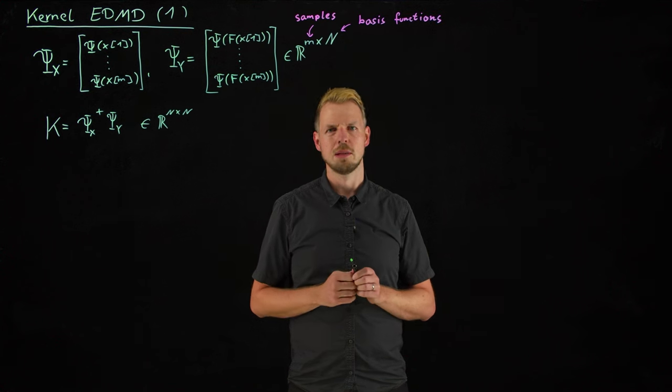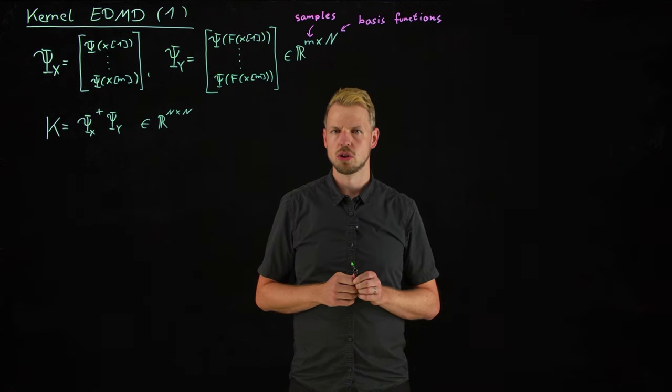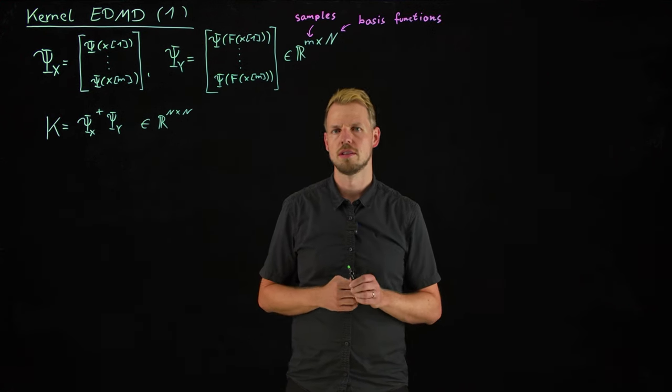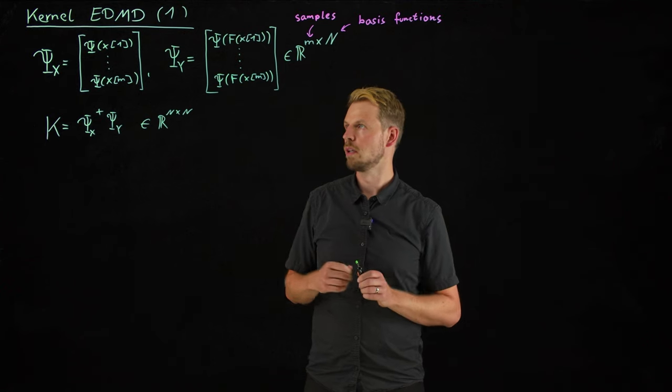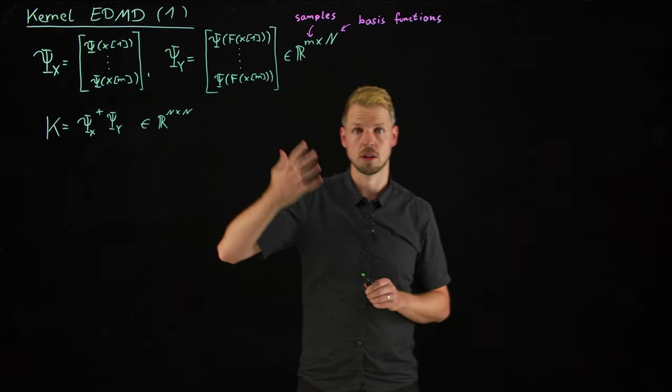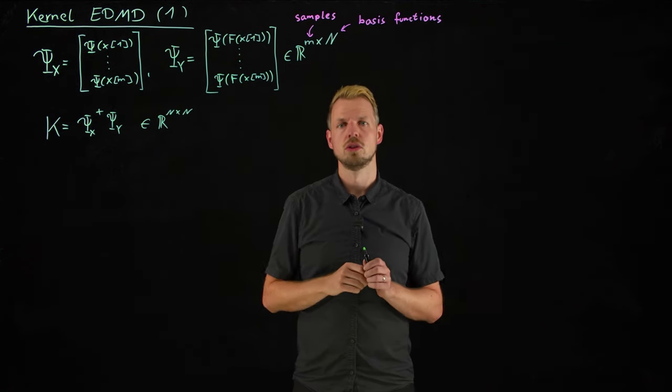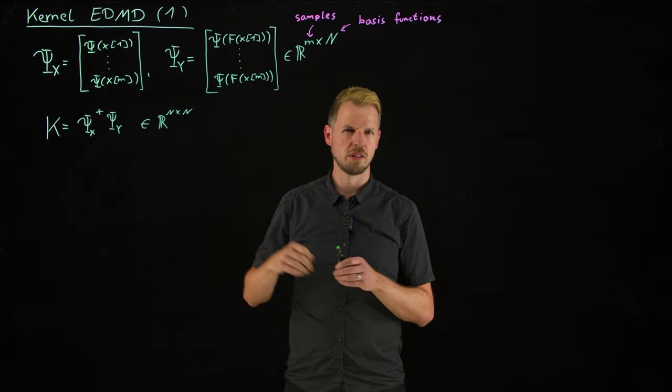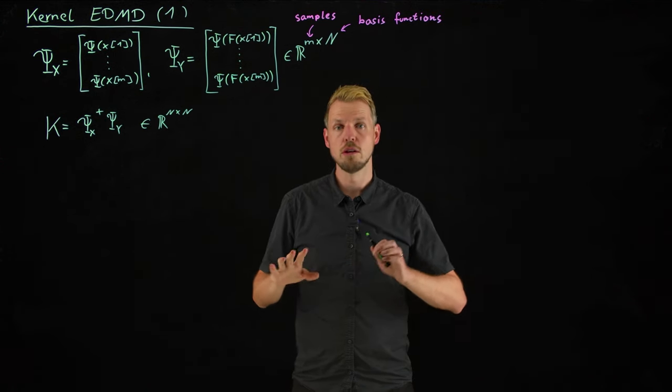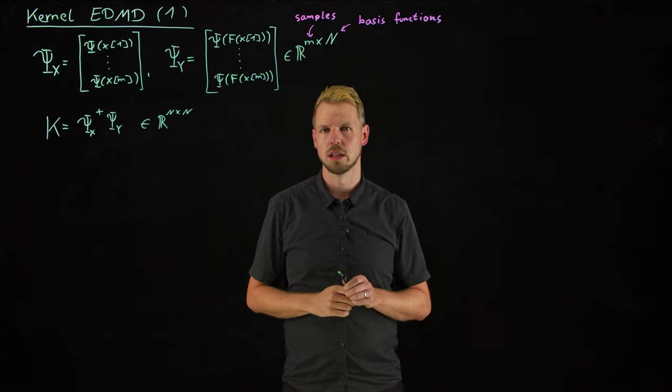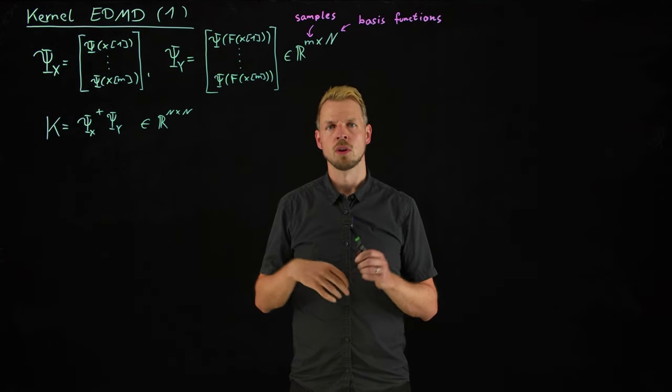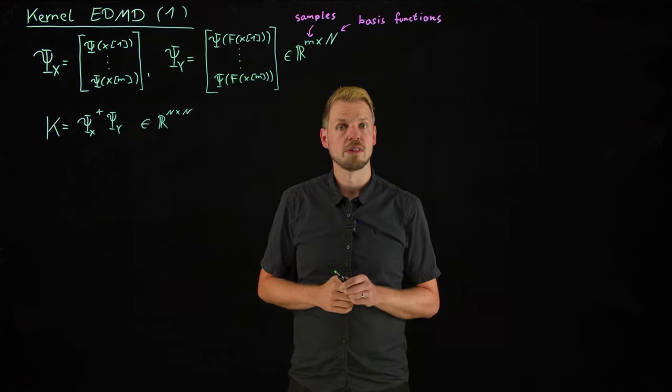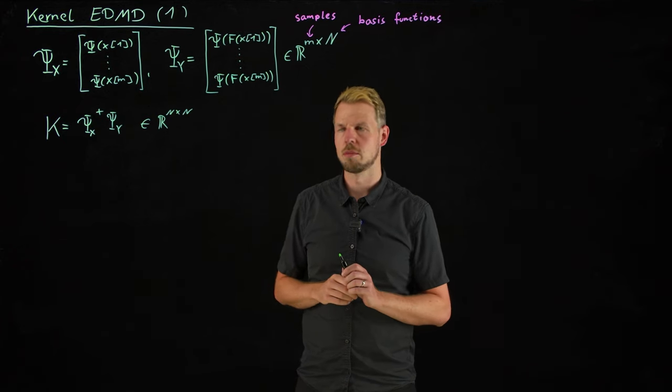What we have not talked about so much is the question of computational cost this invokes. And this is the idea of this and the next two videos: how to avoid explicit calculations of these large dictionary vectors if we choose to select a larger dictionary or if it pops up on its own. I will have an example in a couple of minutes.